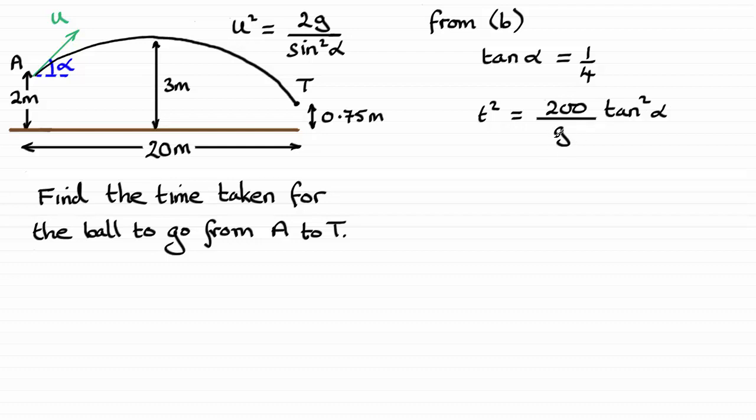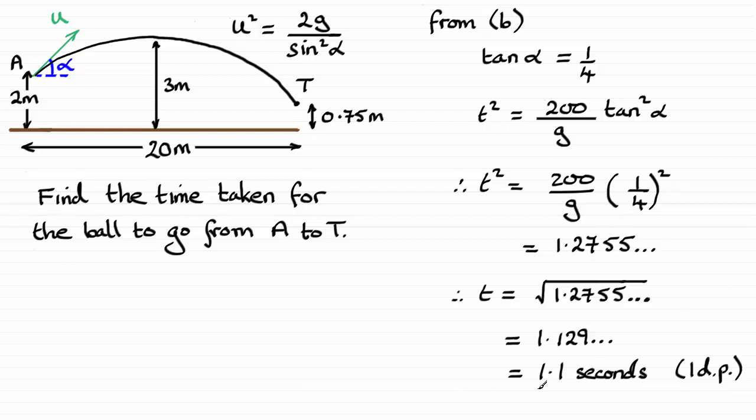So all I need to do now is just take G to be 9.8, substitute tan alpha equals a quarter into here, and solve for T squared, and then take the square root. So if we substitute the quarter in, you end up with T squared being 1.2755 and so on. And then if you square root this, you end up with T equaling 1.1 to 1 decimal place.